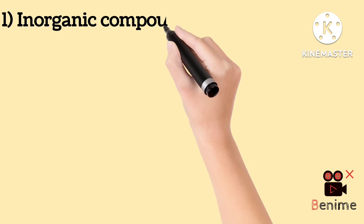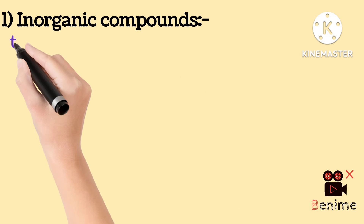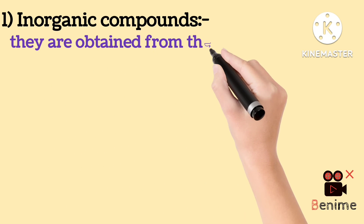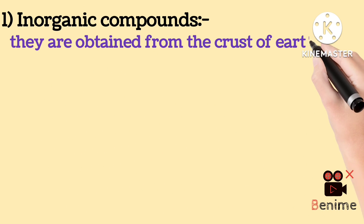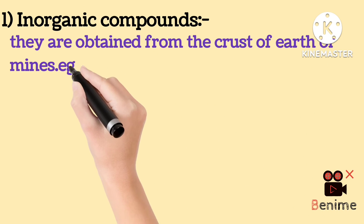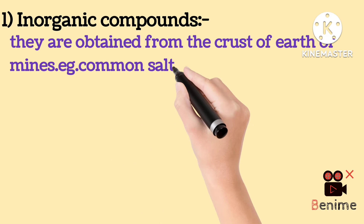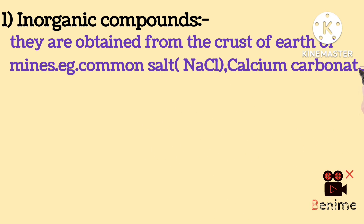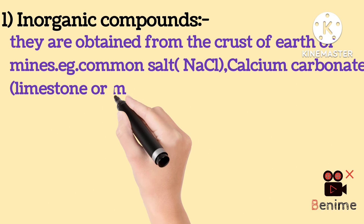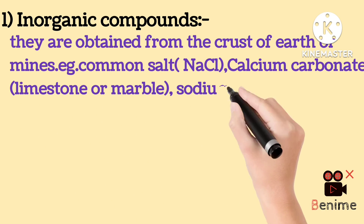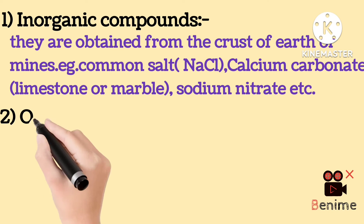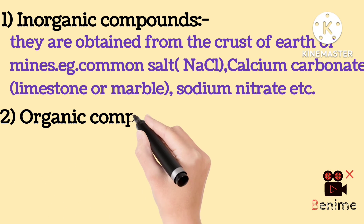Inorganic compounds are obtained from the crust of the earth or mines. For example, common salt (NaCl), calcium carbonate (that is limestone), sodium nitrate, etc.